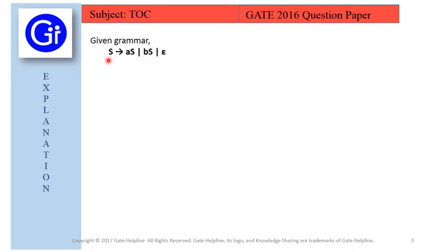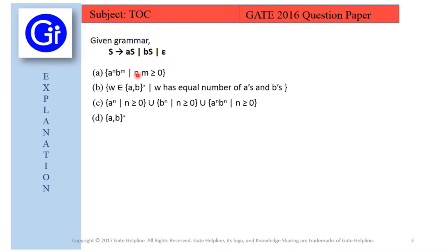The options given in this question are a, b, c, and d. Now we will try to eliminate all these options one by one and try to reach the answer by this elimination method. First of all we will try to generate some strings from this grammar and then we will see whether these options can generate those strings.